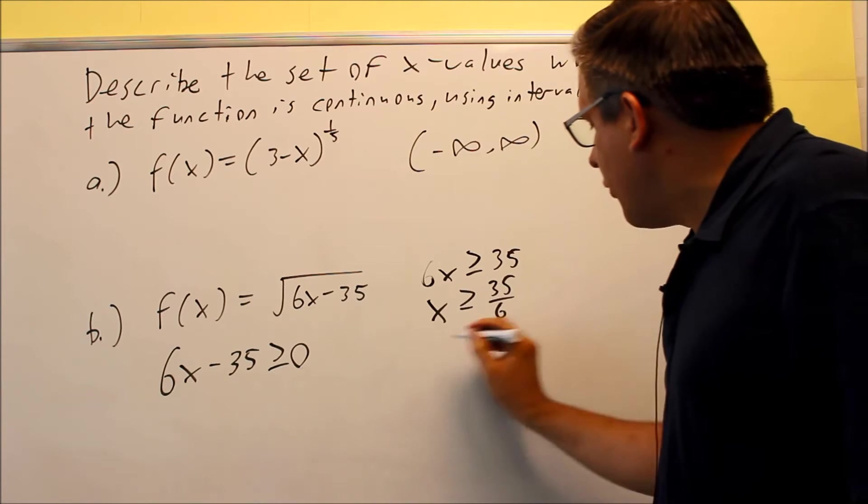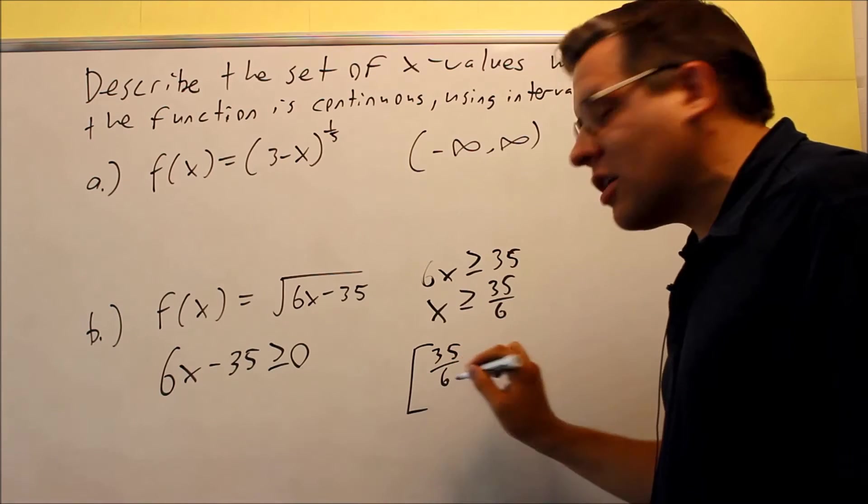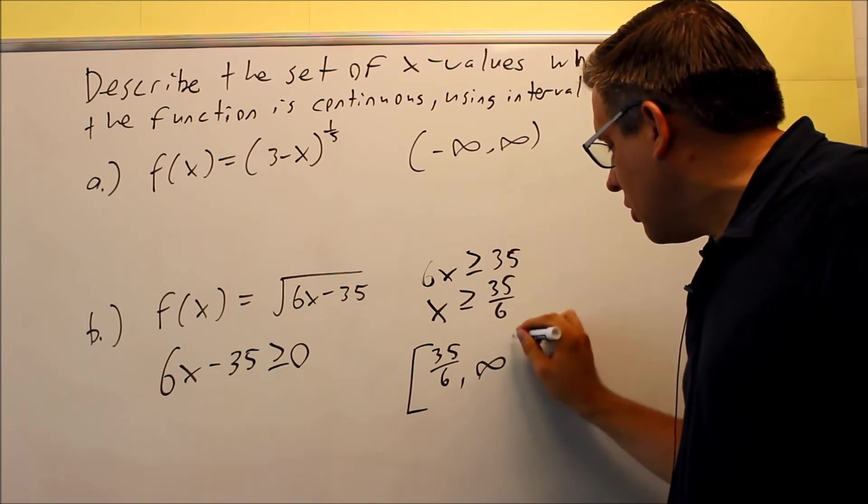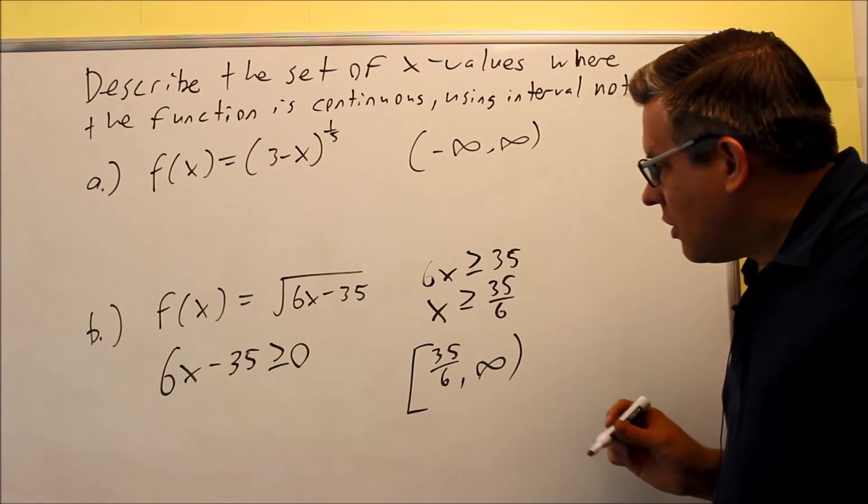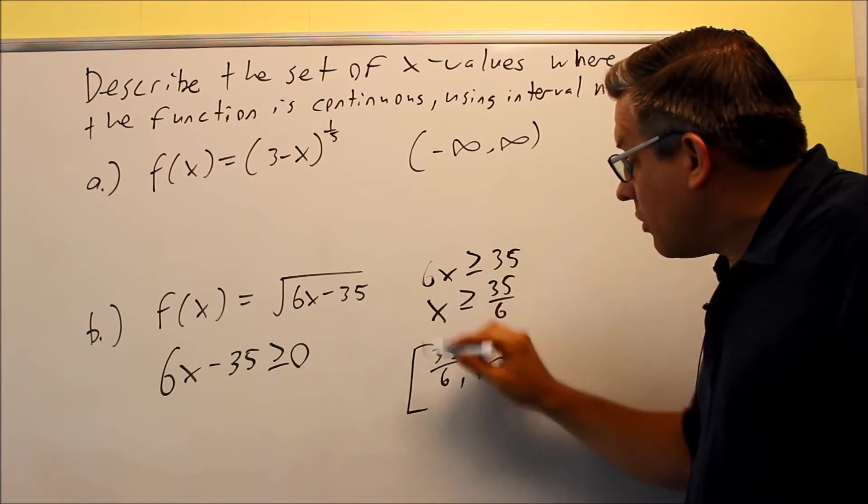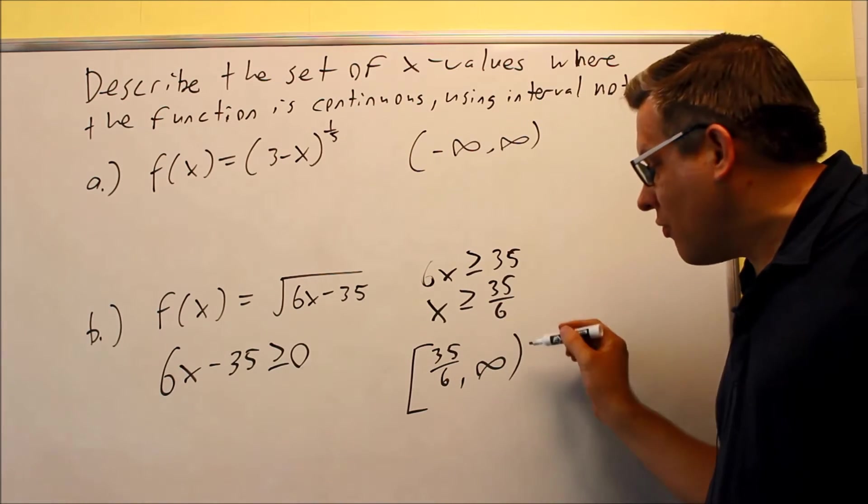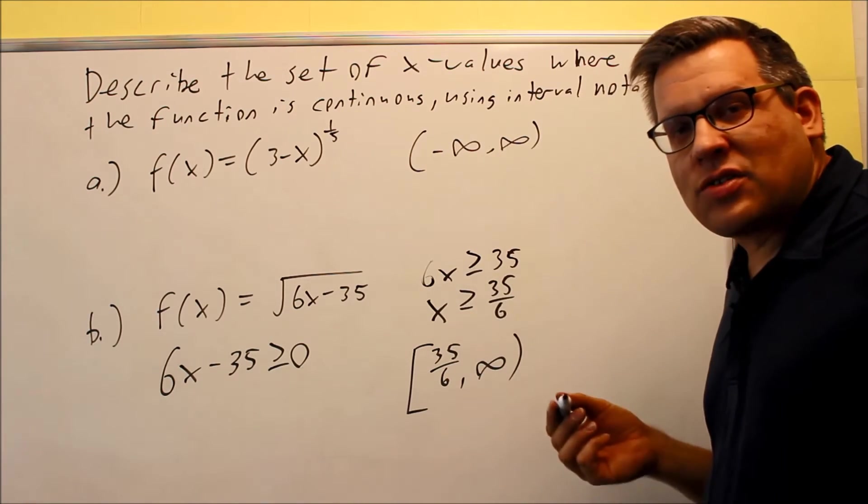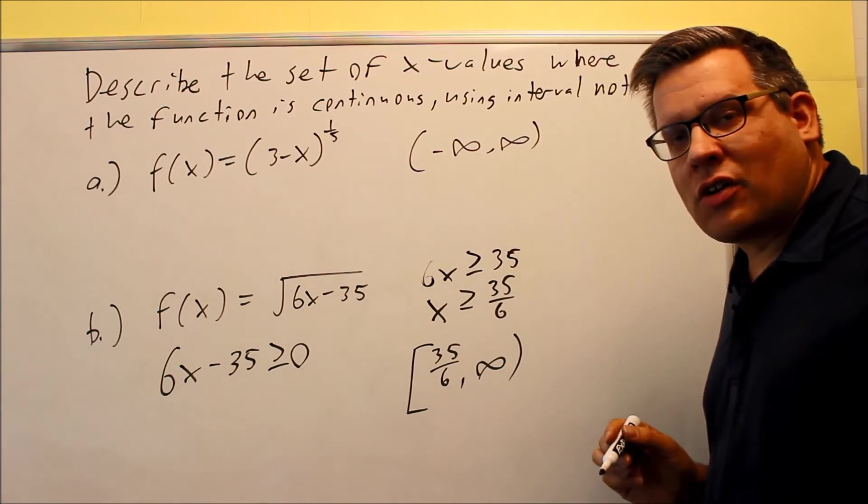For this one, greater than or equal to for interval notation, you're going to use a bracket on that, 35 over 6 and that's going to go to infinity. Infinity, negative infinity, always going to have a parenthesis on it. And that would be, this is the only numbers that would be continuous starting from 35 over 6 to infinity. If you use anything else, it's not going to be, the graph actually doesn't exist there because you can't take a square root of negative numbers.